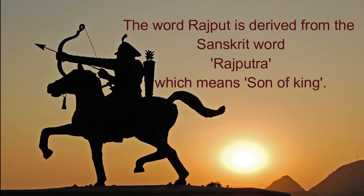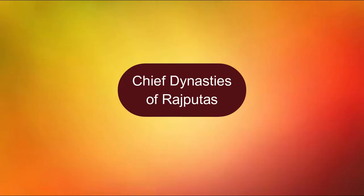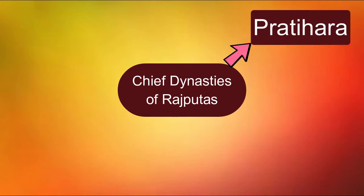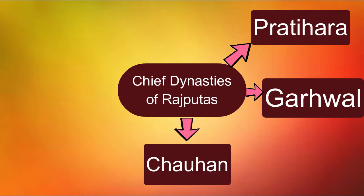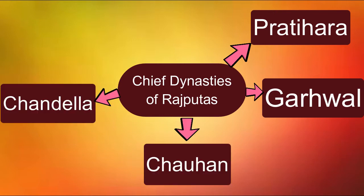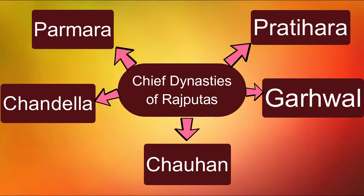Let's know about some of the major dynasties of Rajputras. These were as follows: Pratihara, Garhwal, Chauhan, Chandela, and Paramara. Let's find out more about these dynasties in detail, one by one.